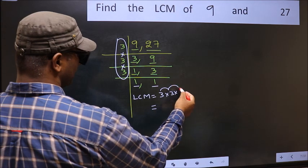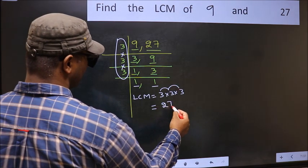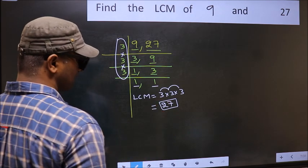3 into 3 is 9, into 3 is 27. 27 is our LCM.